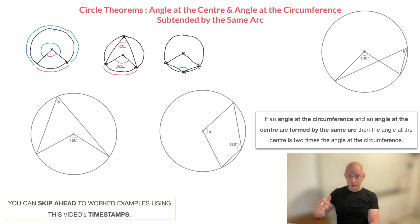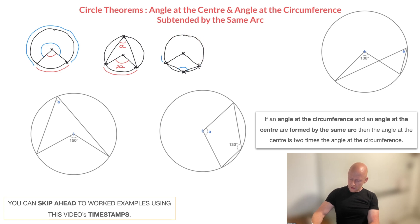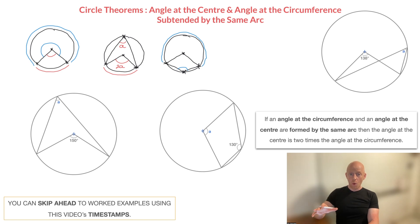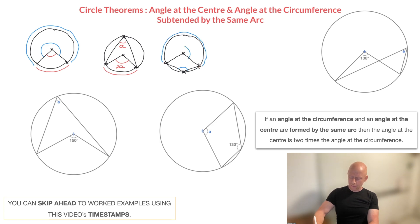To answer that important question, you need to ask yourself which arc is subtending the angle at the circumference. The arc forming this angle is this longer arc I'm hovering over right now — I'll highlight that long arc in blue. Now that we know which arc is subtending the angle at the circumference, we need to choose the angle at the center which is being subtended by that same arc. The angle at the center being formed by this blue arc is this angle right here.